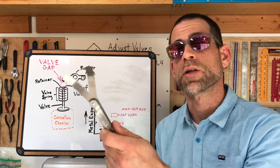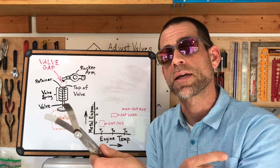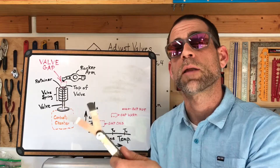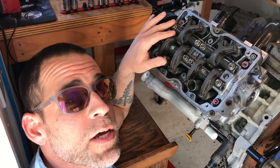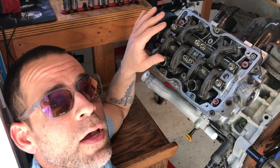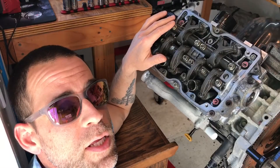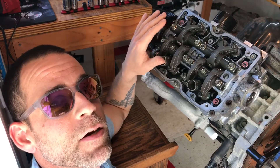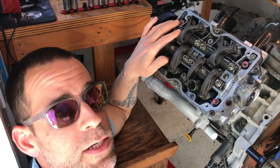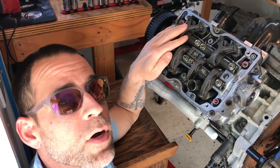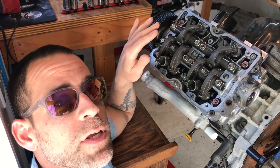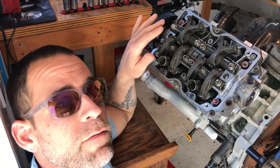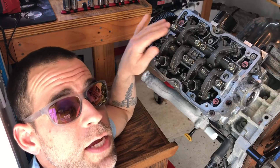Now I'm going to take my feeler gauge and jump over to that Forester engine where I'm doing the head gasket job and walk you guys through setting the valves. This is a set of heads from a 2000 Forester. The first thing you need to do is set the piston at top dead center for the valves you'll be adjusting. On this engine, this is the number one cylinder, so I have the piston at top dead center, which means the valves are fully seated, and if the engine's cold, you're ready to go ahead and set your valves.